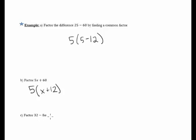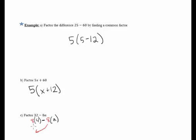Now let's factor 32 minus 8a. I'm not going to break this up as 2 times 2 times 2 times 2 times 2 and have this long tree. I'm going to say: what do 32 and 8 have in common? They have a common factor of 8 because 32 is 8 times 4 — and I know that from my multiplication tables. And 8a is 8 times a. We can just pull the 8 out — that's called factoring the 8 out — and what's left over is 4 minus a. And that's how you factor 32 minus 8a. That's your final answer.